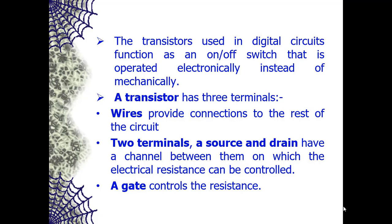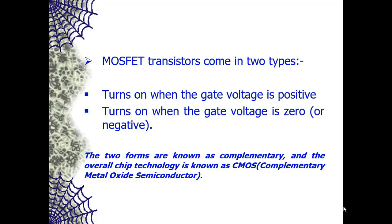Two terminals have a channel between them on which the electrical resistance can be controlled. If the resistance is low, electrical current flows from the source to the drain; if the resistance is high, no current flows. The third terminal is known as the gate — the gate controls the resistance. We will see how switching transistors can be used to build more complex components for digital systems.